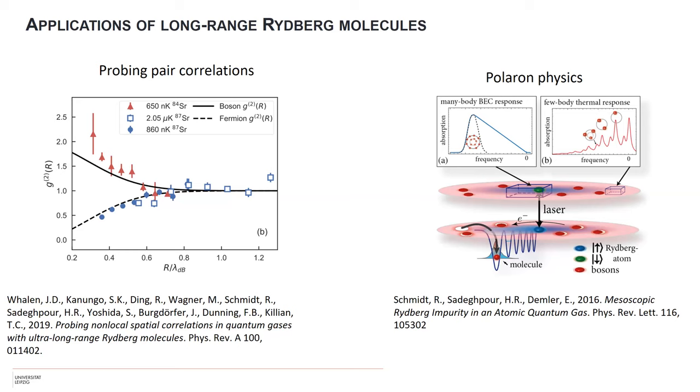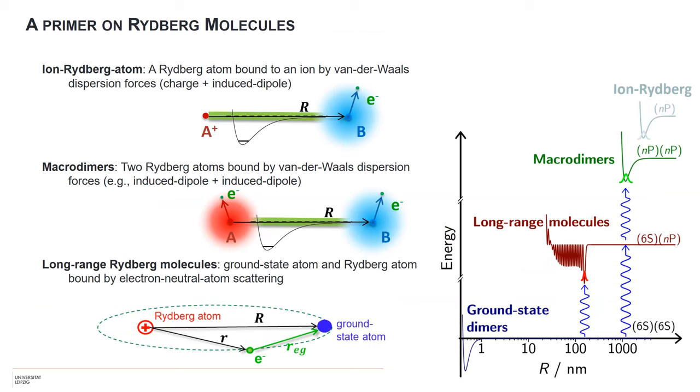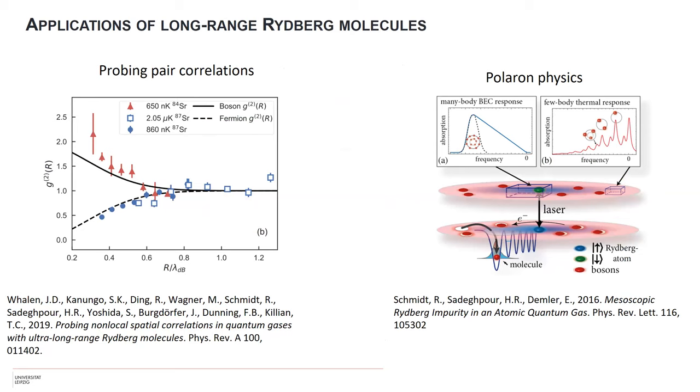I continue the motivation that Thierry gave yesterday and other people on why these are interesting. This minimum - the vibrational wave function in that minimum is localized very strongly at a large internuclear distance. If you form this by photoassociation, you probe a very narrow region of internuclear separations. This was used to probe pair correlations in the group of Tilman Pfau to see bunching and anti-bunching for fermionic or bosonic species of strontium.